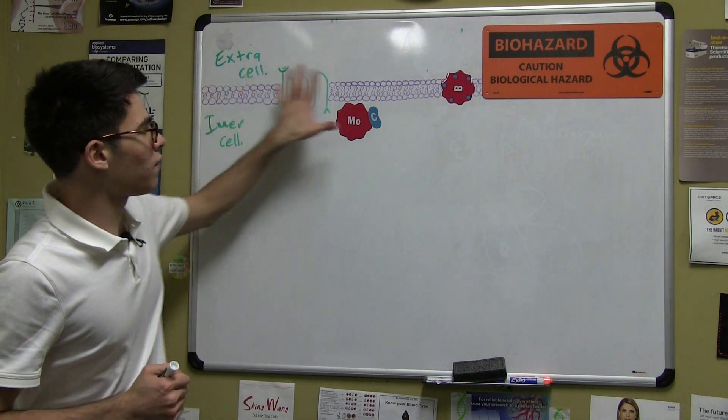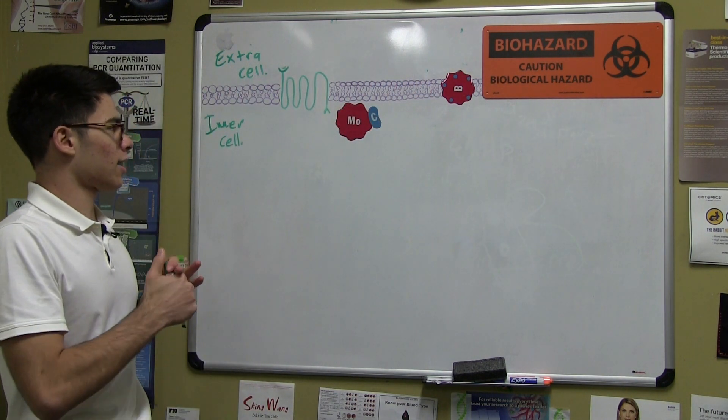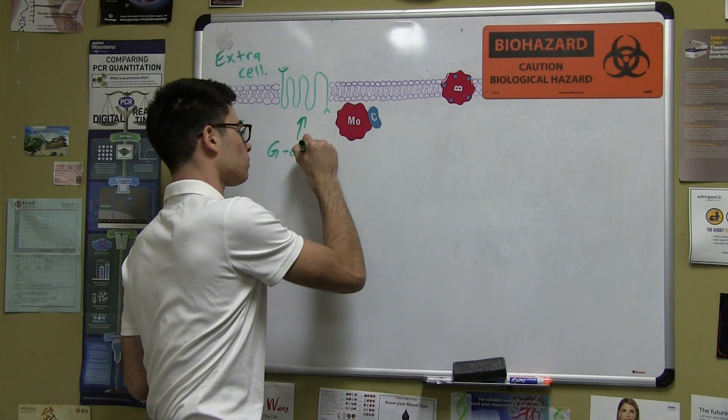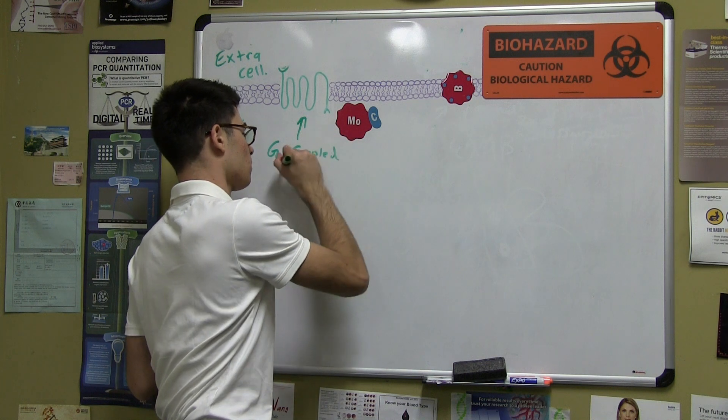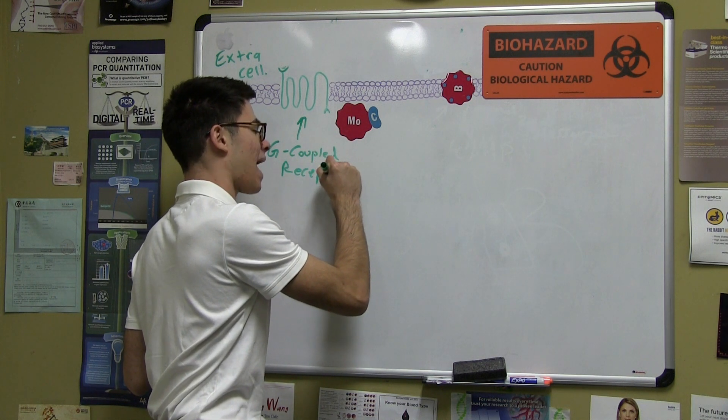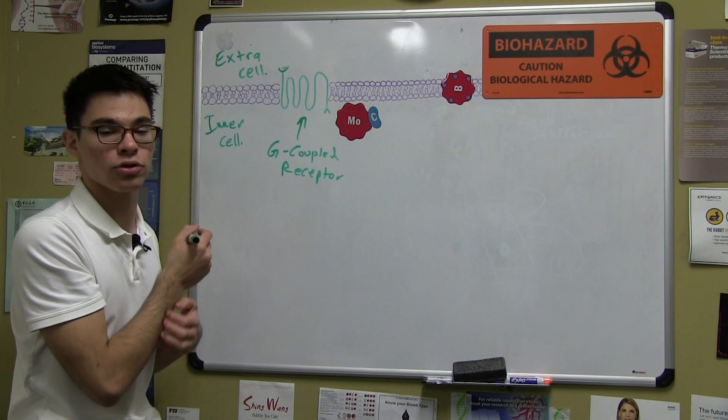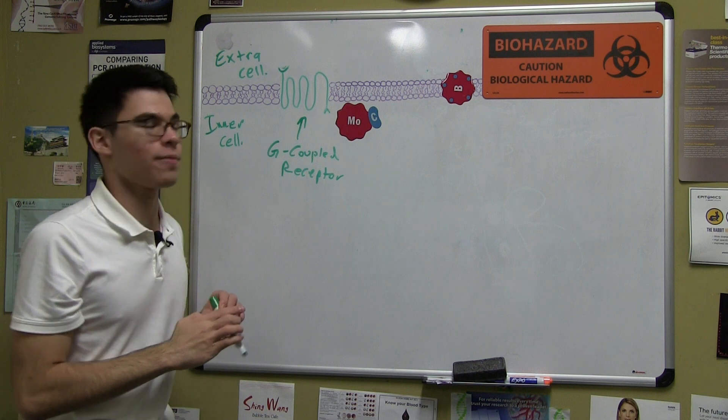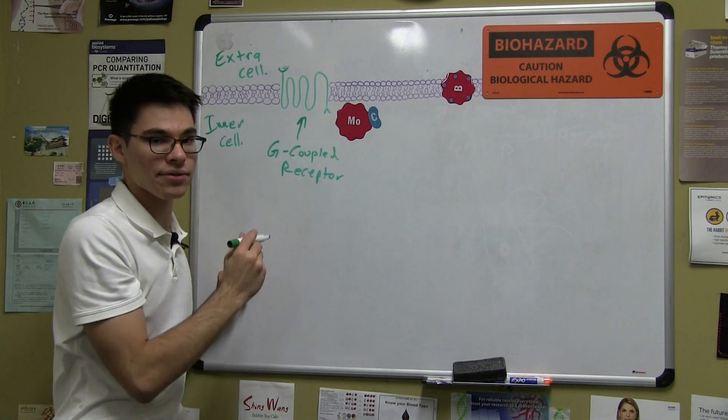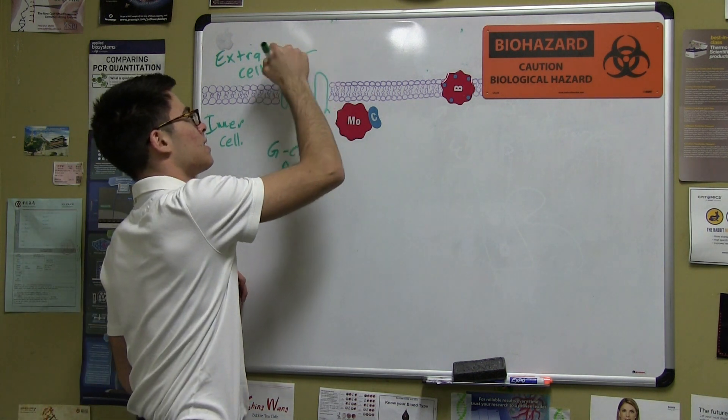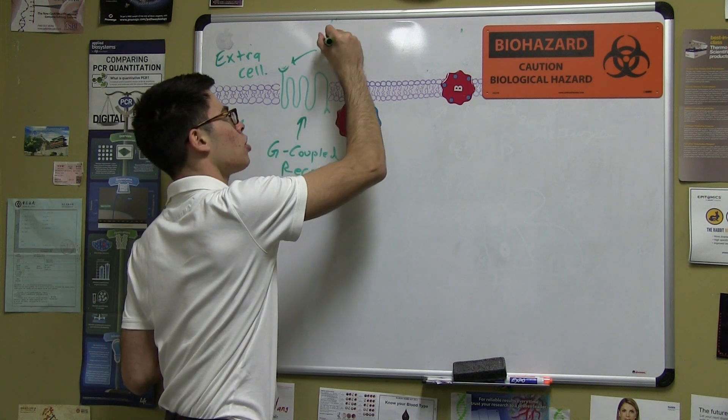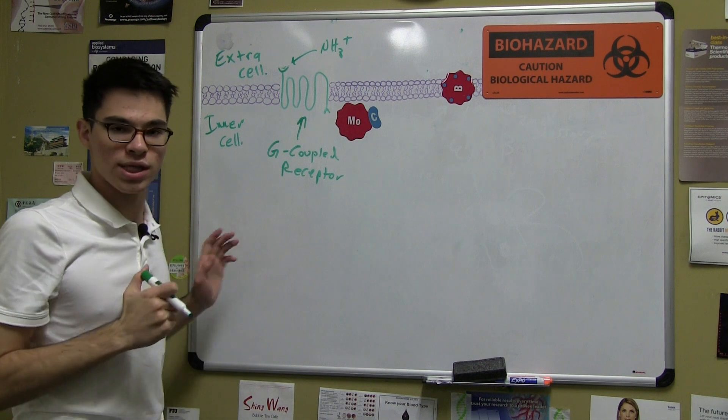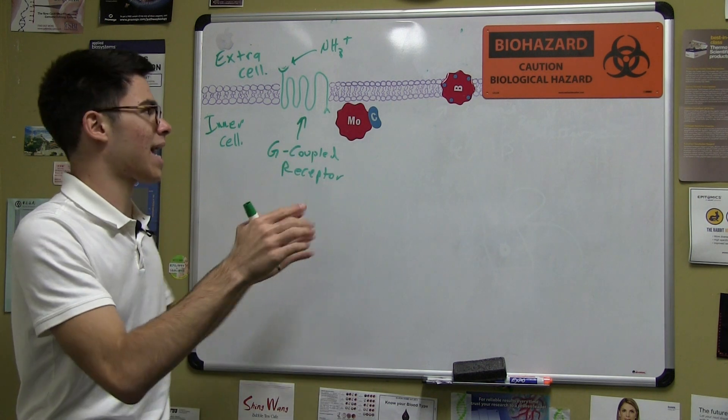So here we have a view of the lipid bilayer, and we have here our G-coupled receptor. So right now we're looking at everything in its inactive state before it's received its signal to do its stuff. Here's our G-coupled receptor, which is known as a serpentine receptor because it spans the cell membrane exactly seven times. And here facing the extracellular menu, we have the amino terminus, which is where our primary signaling molecule will bind. This is going to be the molecule that's going to tell us to set off this cascade.